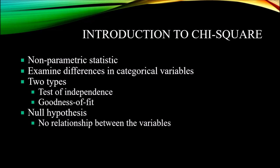The chi-square test is a non-parametric statistic, also known as a distribution-free statistic. We often use chi-square when we have a research design that produces data that violate the assumptions of parametric statistics. For example, the homogeneity of variances assumption is violated, or the normality assumption is violated.